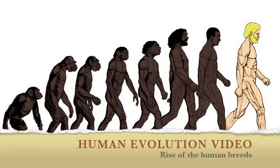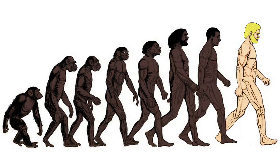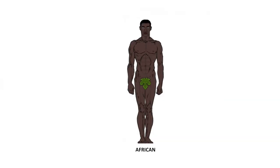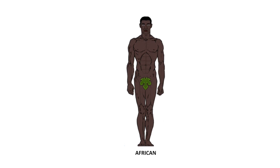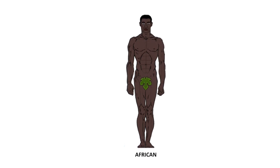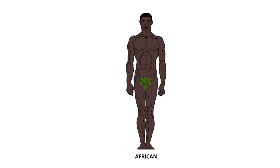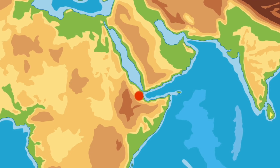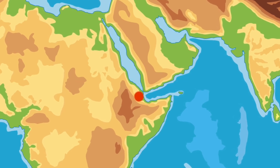This is a summary of the evolution of the differing human breeds of man. Timescales given are a general approximation. The first humans, Homo sapiens, were black Africans. They arose around a quarter of a million years ago in northeast Africa from Homo erectus.